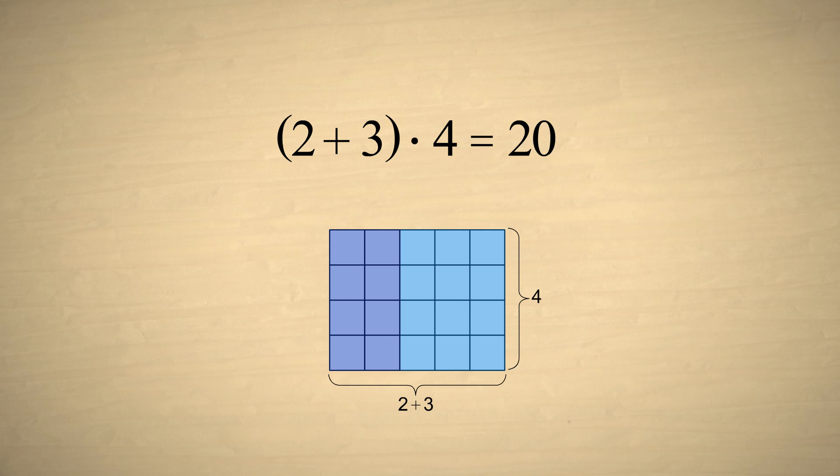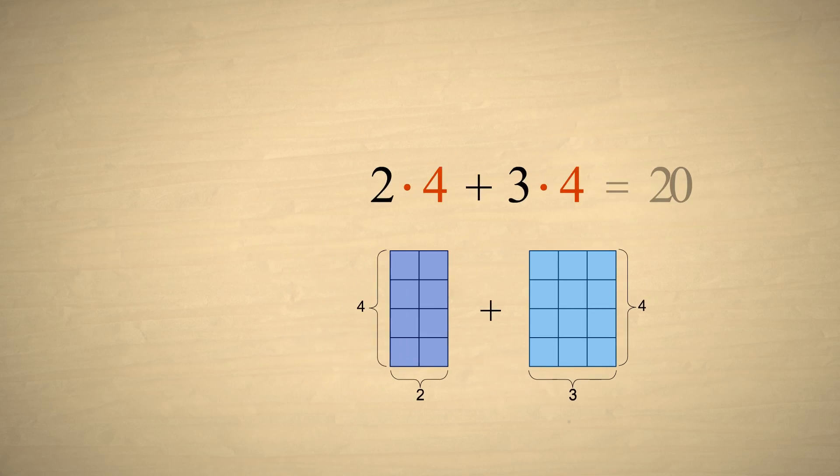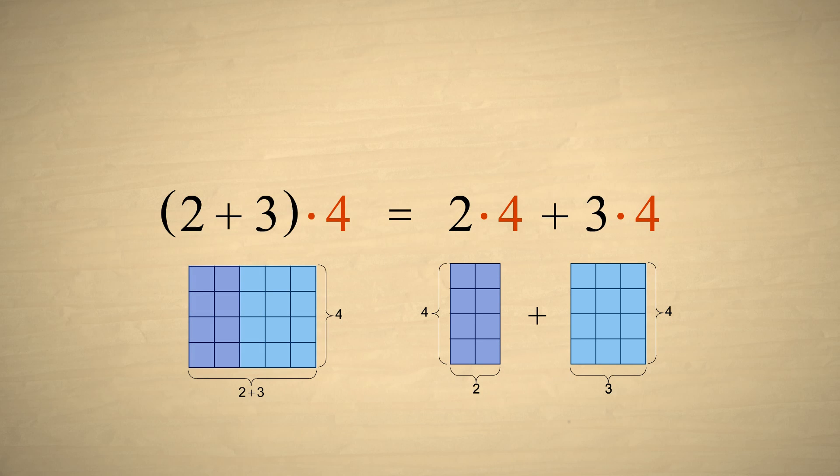So how could this expression be written without parentheses without changing the result? We can see from the diagram that both the 2 and the 3 must be multiplied by 4. So if we remove the parentheses, we must multiply each number in the parentheses by 4. In other words, the multiplier must be distributed to each number in the parentheses. This is called the distributive property of multiplication over addition, or for short, the distributive property.